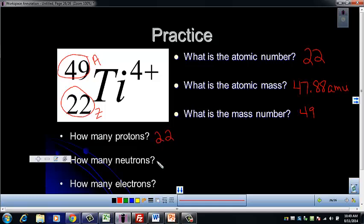How many neutrons? Remember that protons plus neutrons equals the mass number. So if that's the case, neutrons, if we subtract protons from both sides, then those will cancel. Neutrons is equal to mass number minus protons. So that's 49 minus 22, which is 27.